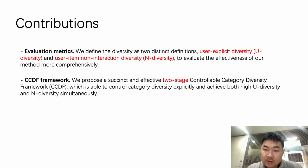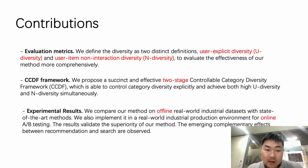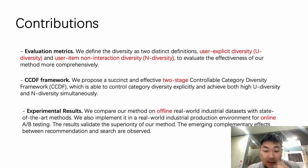Secondly, we propose a succinct and effective two-stage framework CCDF, which is able to control category diversity explicitly. Thirdly, we compare our method on online and offline experiments. Later, we will provide a detailed introduction to our work from those three perspectives.